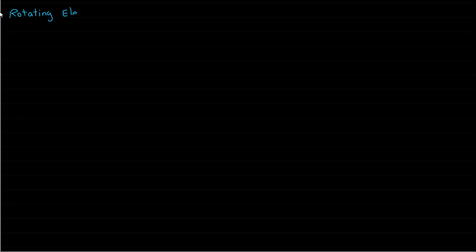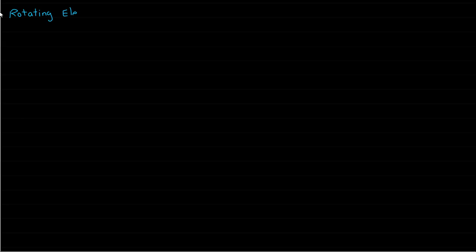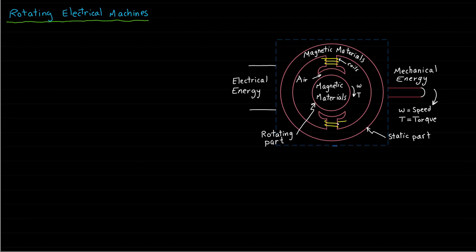Let's start with the rotating electrical machines. This figure shows a general cross section of one of the electrical machine types. In general, the rotating electrical machine has a static part and a rotating part, and in between there is an air medium to allow for the rotation. The machine is able to convert electrical energy to mechanical energy, and in this case the machine is called a motor. Also, the machine is able to convert mechanical energy to electrical energy, and in this case it is called a generator.